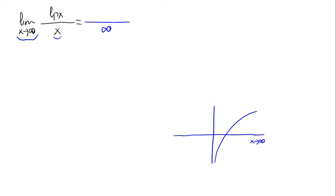So we obtain infinity divided by infinity, and this is an indetermination because we cannot say what is the result of this.